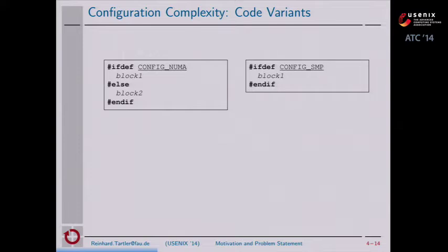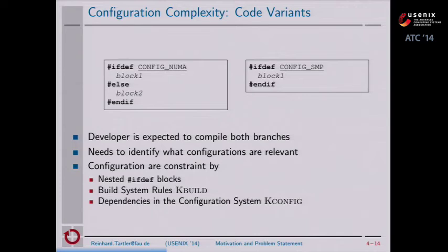This is very common in the Linux scheduler's task structure. A Linux developer is expected to test and compile both branches all the time when developing code. This is challenging because the developer also needs to identify which configuration options are actually relevant for the code they're looking at. These configuration options can also be influenced by other configuration options through nested ifdefs, build system rules, and dependencies declared in the configuration system kconfig.